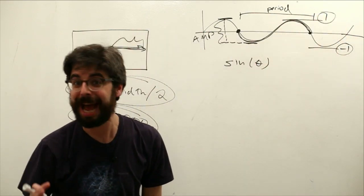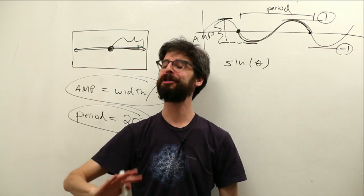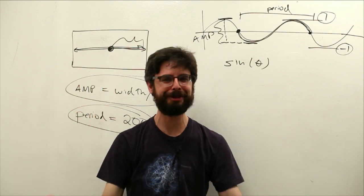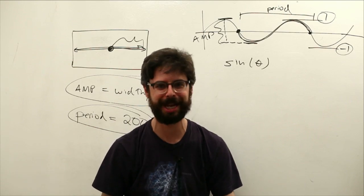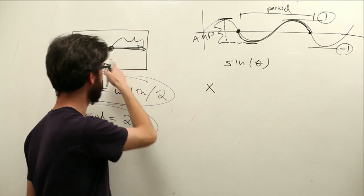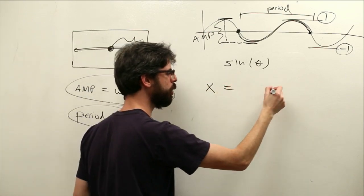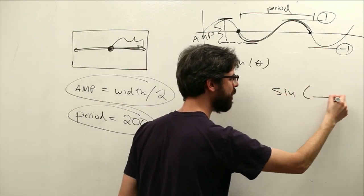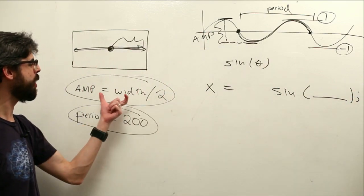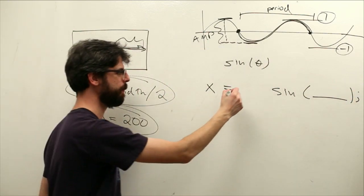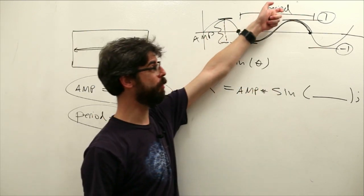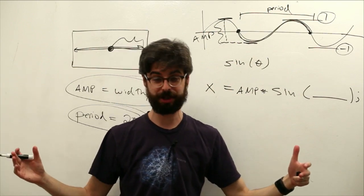Well actually sine oscillates between one and negative one. The biggest number you'll ever get out of the sine function is one. The smallest number you'll ever get out of the sine function is negative one. Trust me you're never going to get anything bigger than one or smaller than a negative one.